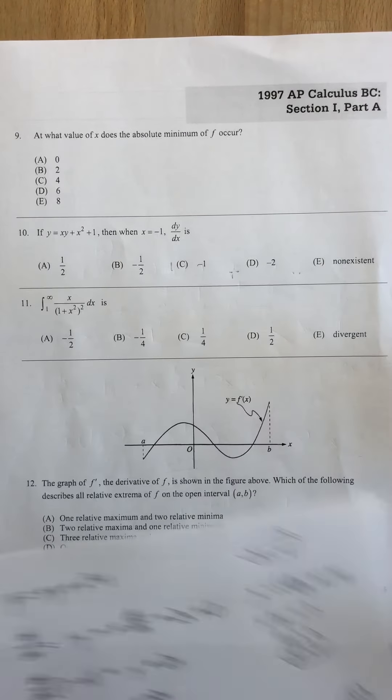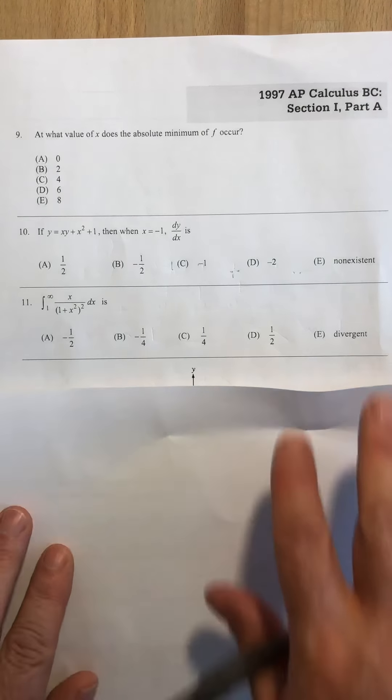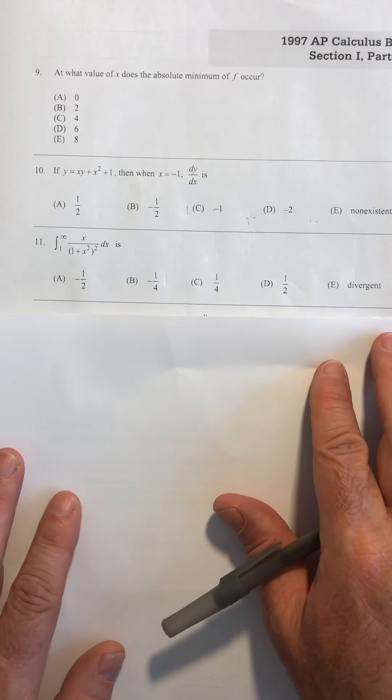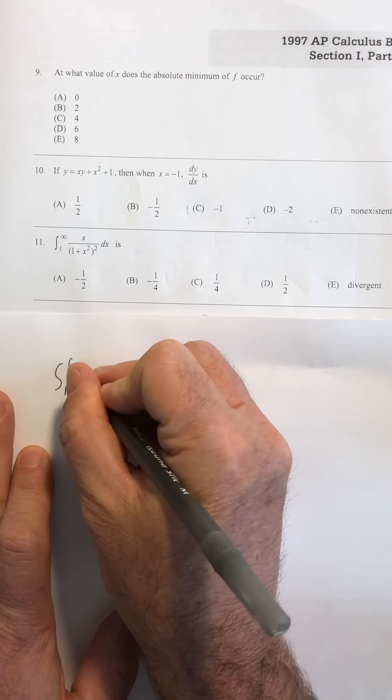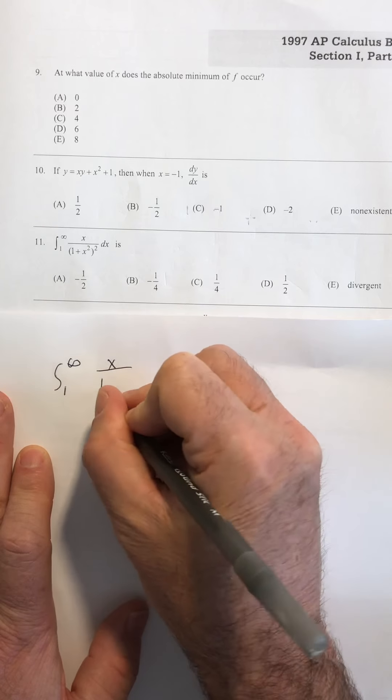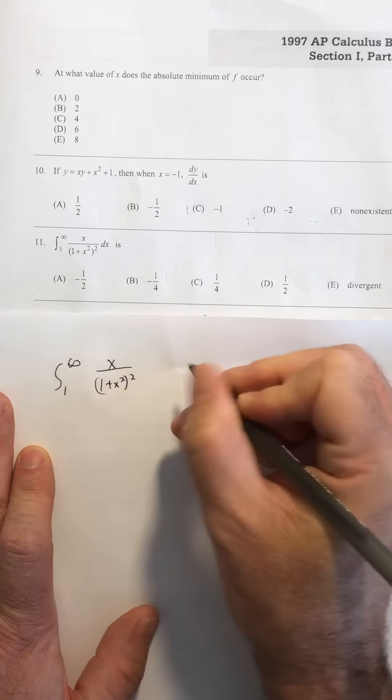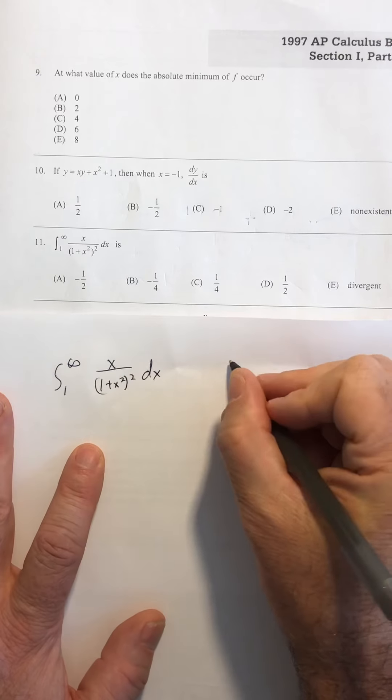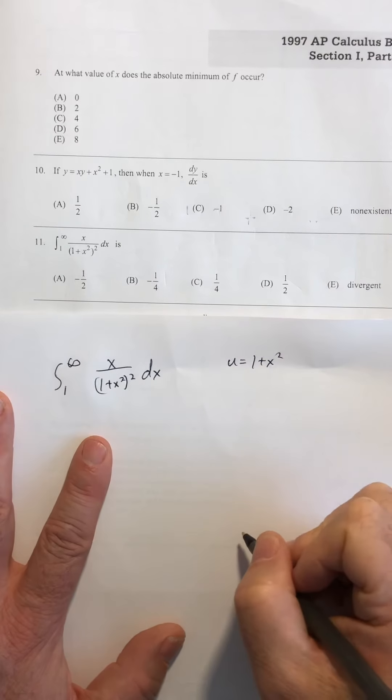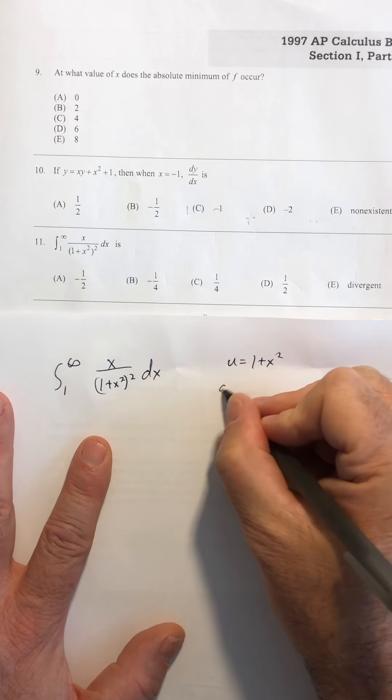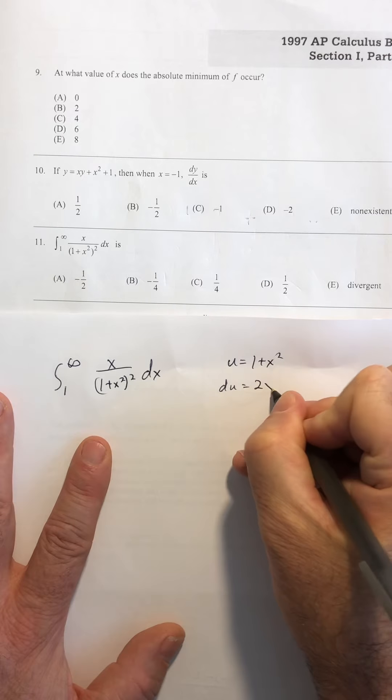All right, 11. We've got an indefinite integral here, 1 to infinity of x over 1 plus x squared squared dx. We should recognize this as a u sub problem. I'm going to let u be the stuff in the parentheses there. du would be 2x dx.